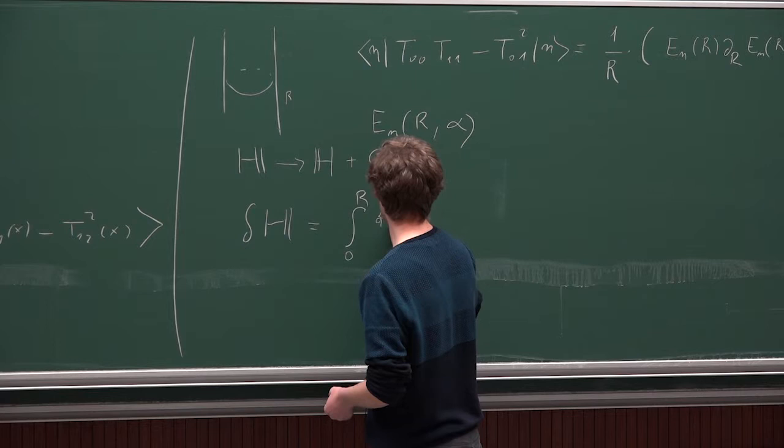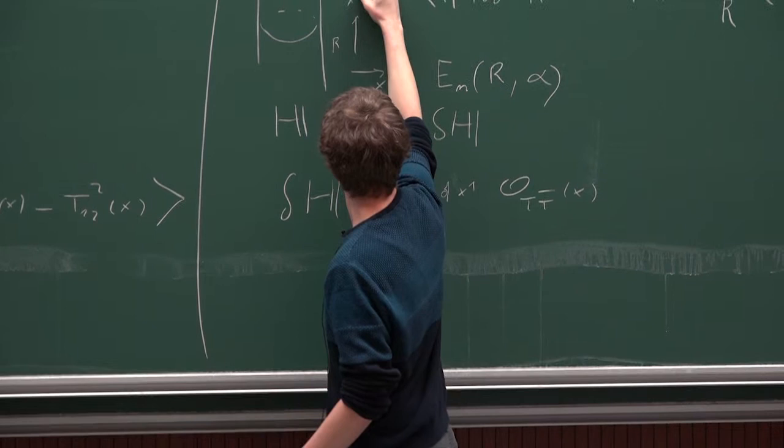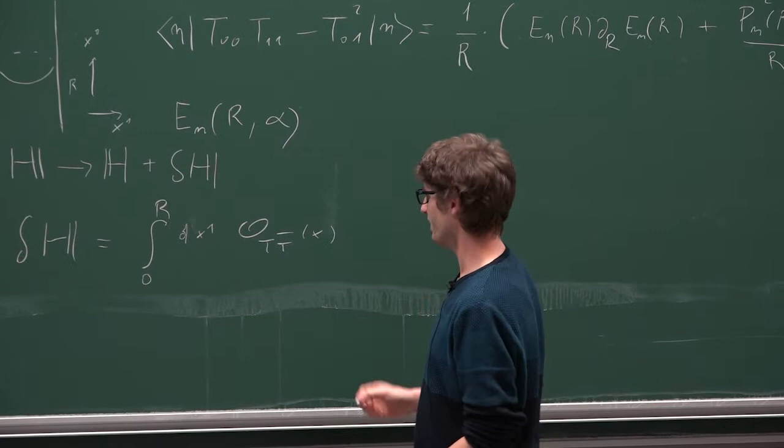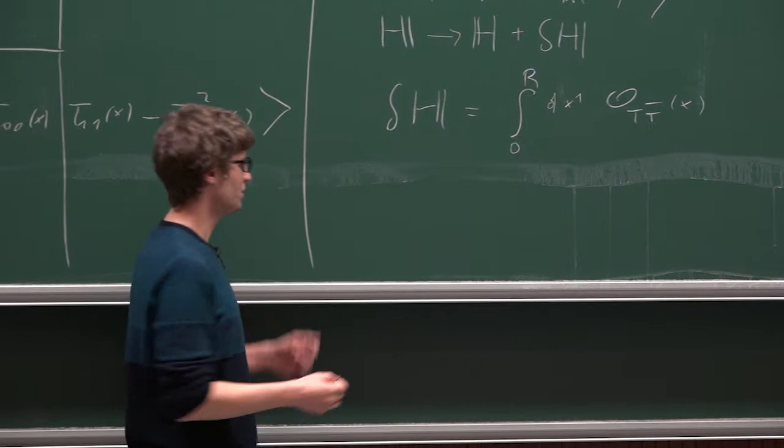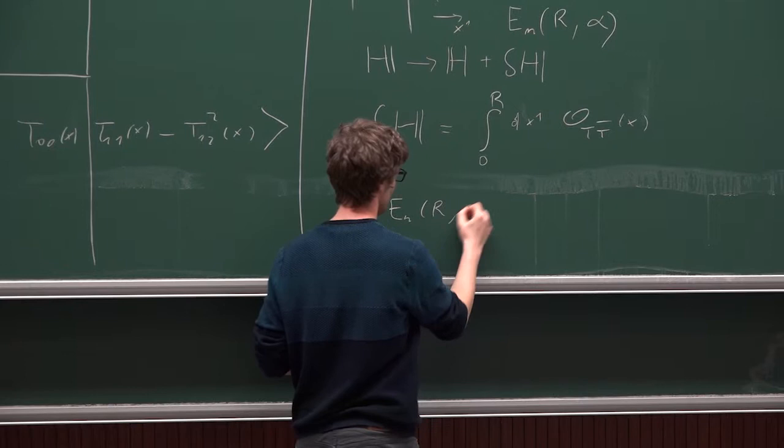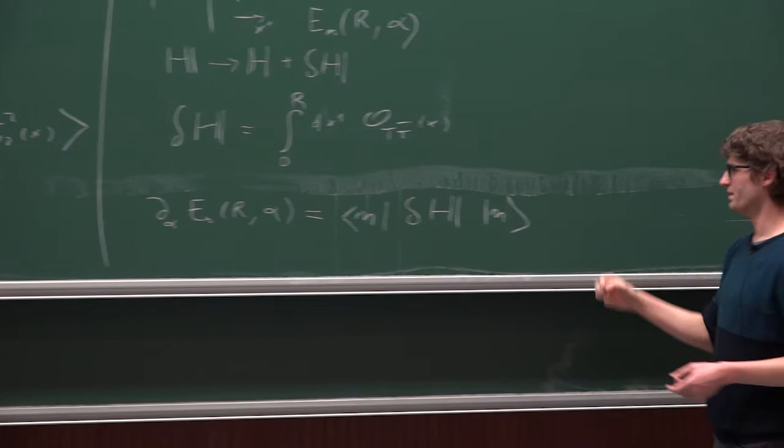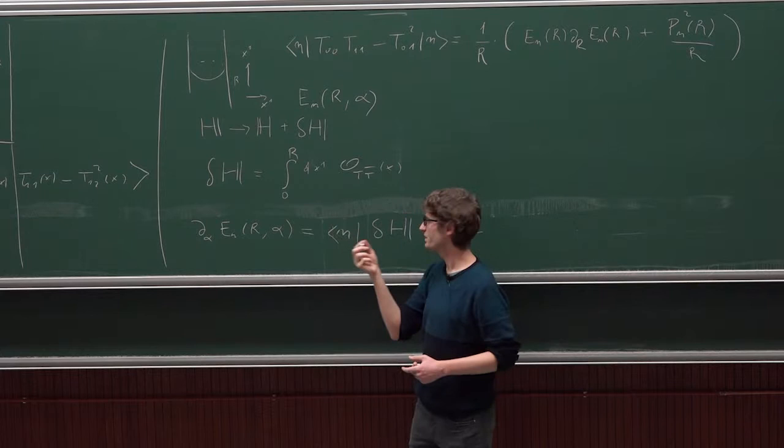So let me write it like this. So this is dx1. Okay, so from this formula if you imagine doing perturbation theory in quantum mechanics, you get the correction to the energy is given by this, right?